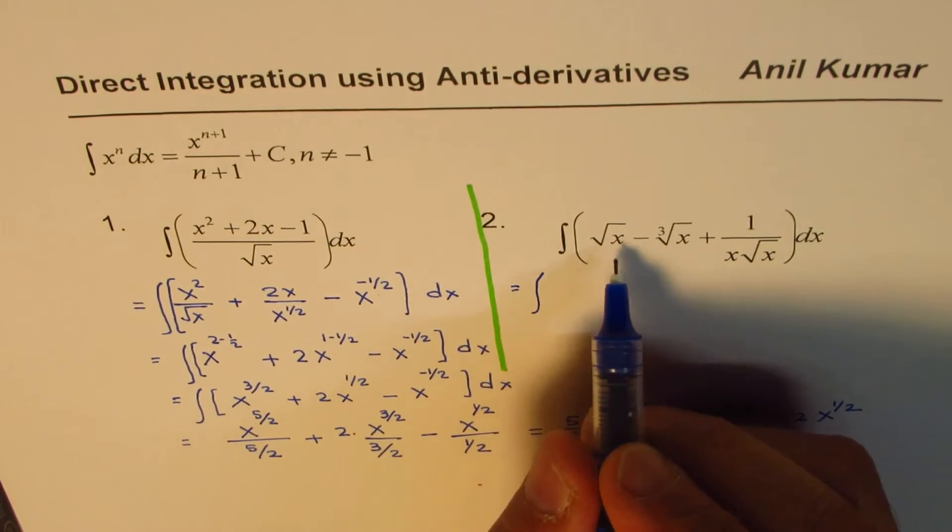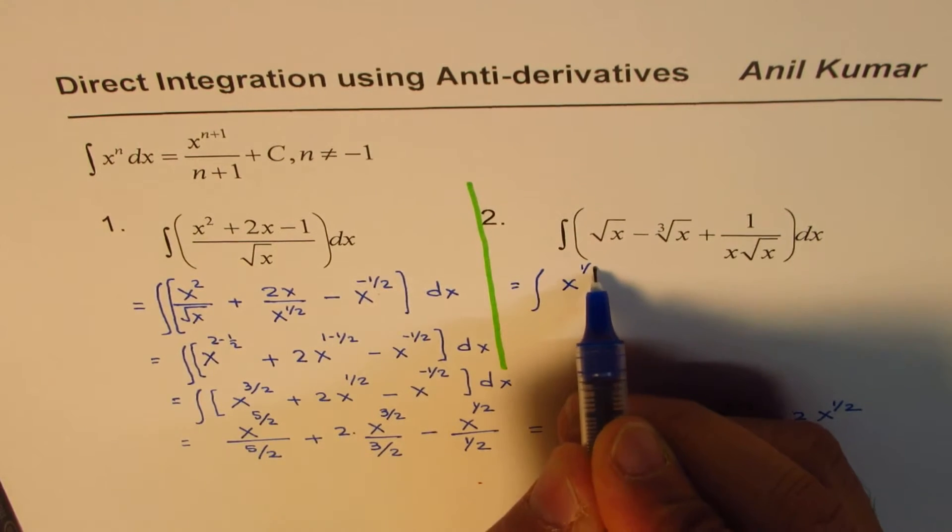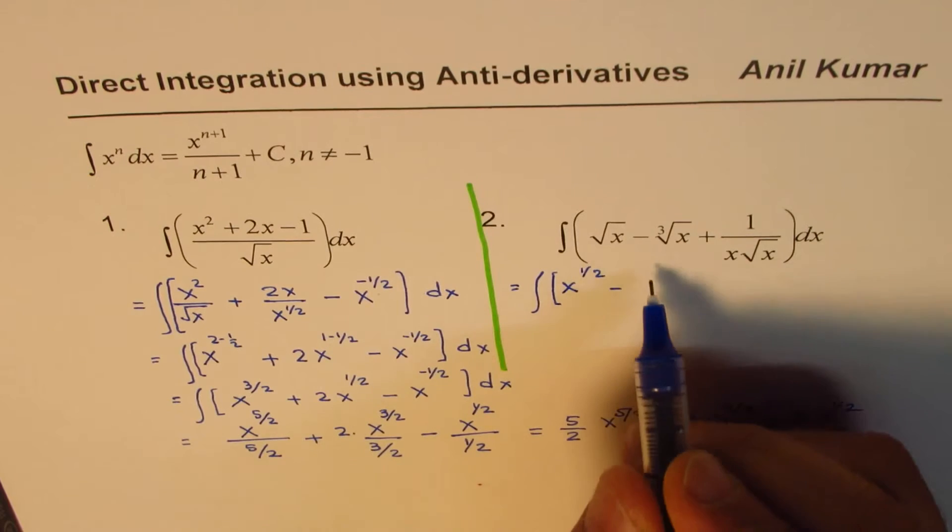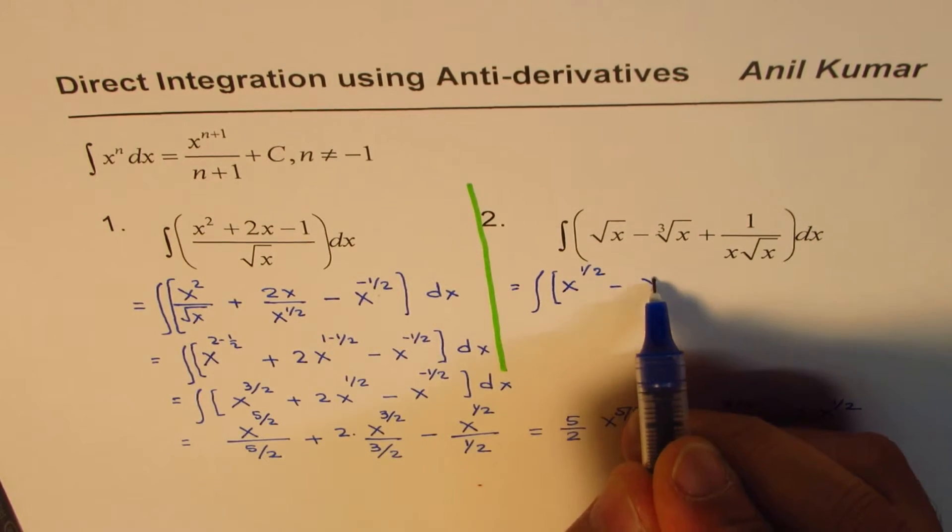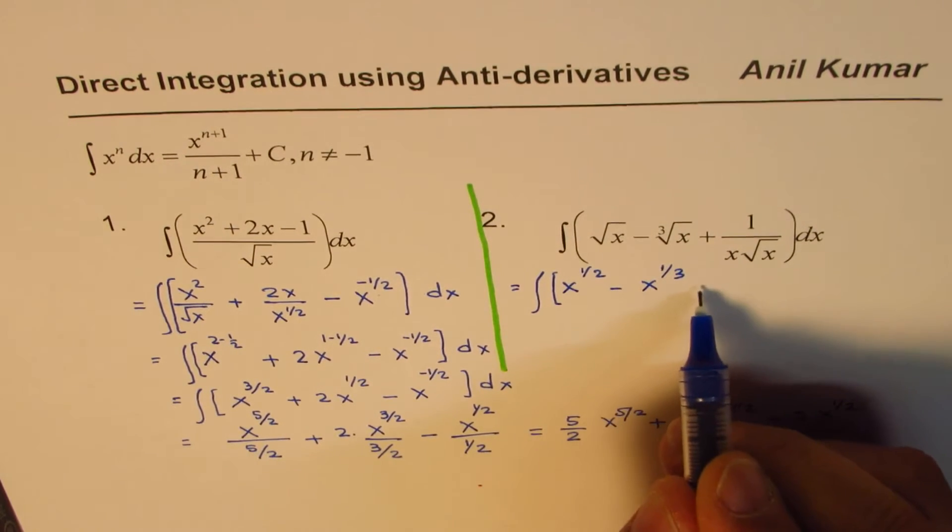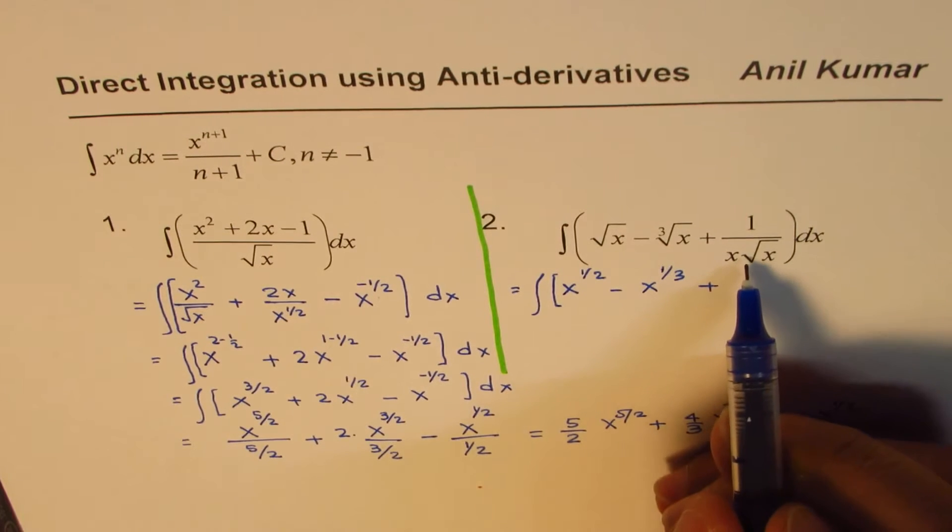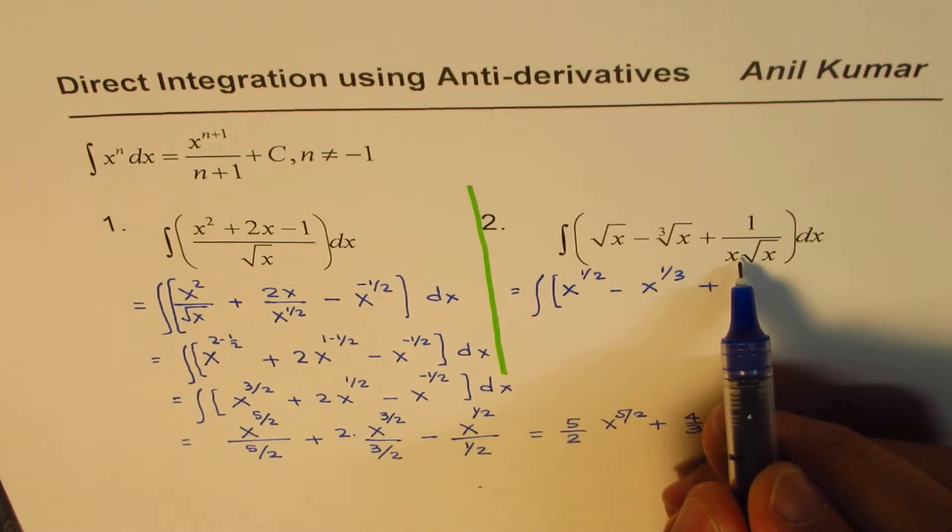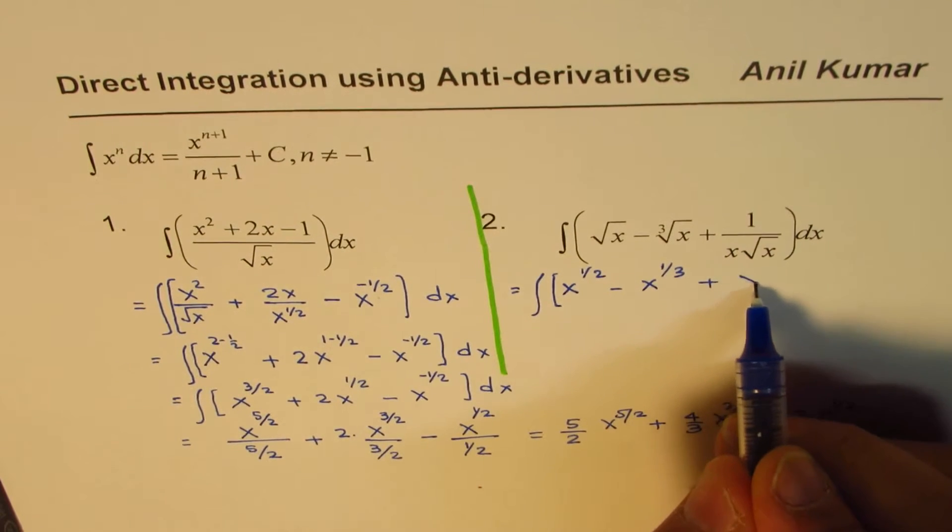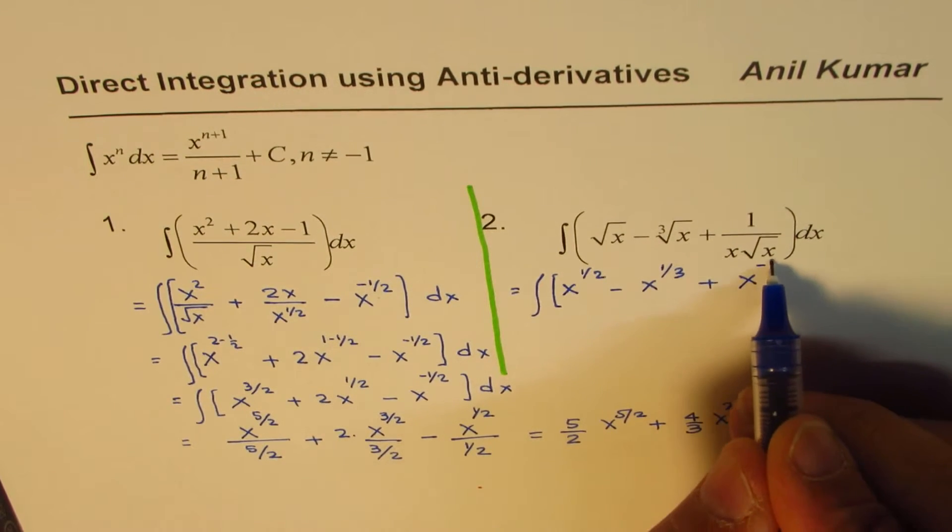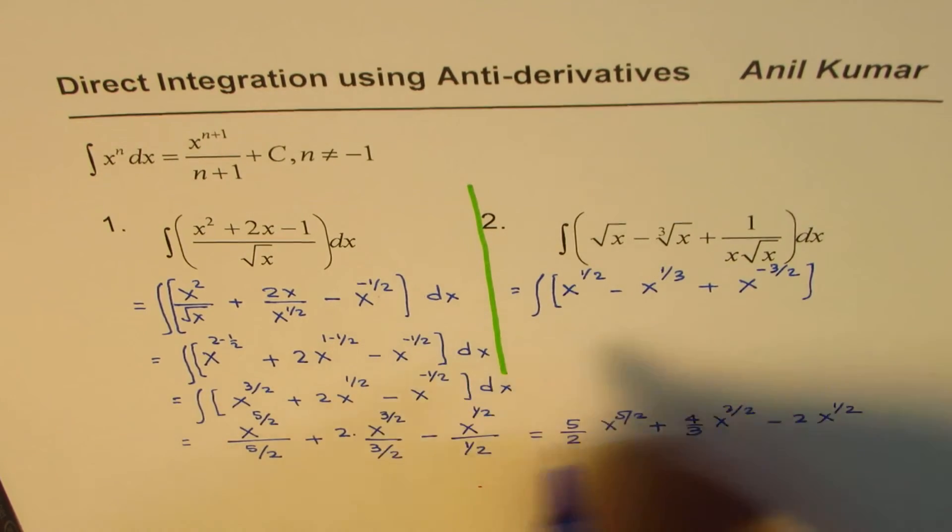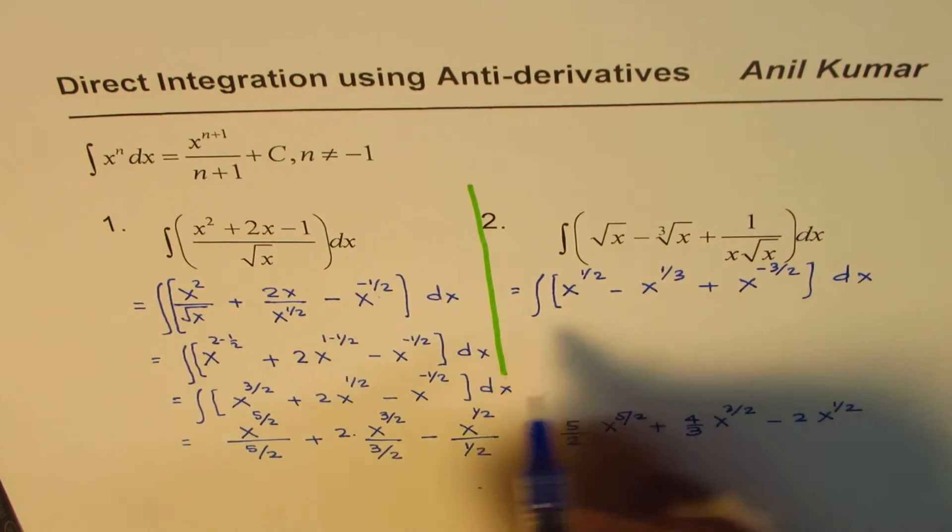Now here is the solution. We write this as x to the power of half. It's always good practice. So write them as rational powers, exponents. x to the power of 1 over 3, plus, now here it is in the denominator, half plus 1, that is 3 by 2. So that means x to the power of minus 3 by 2, since it is in the denominator. So I'm cutting down on some of the steps which we did earlier.